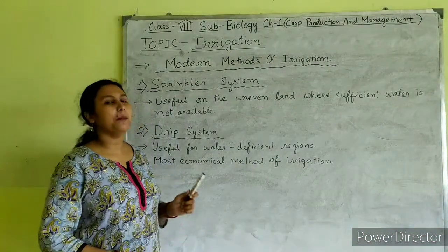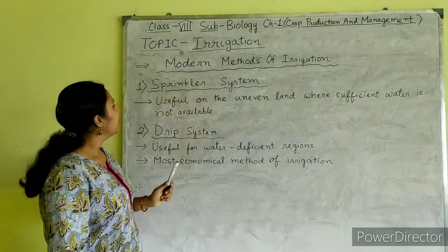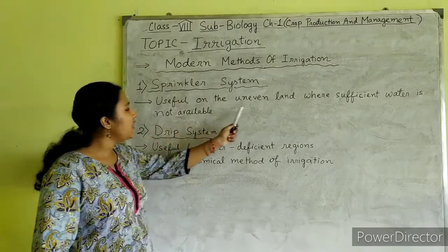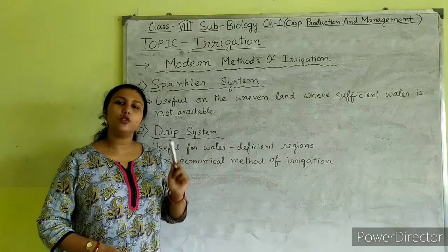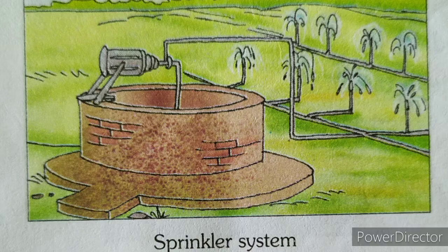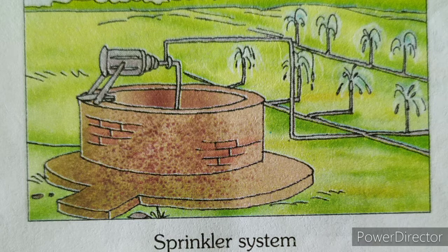Students, we will learn about the sprinkler irrigation system. In the sprinkler system, it is useful on uneven land when sufficient water is not available. In this picture, you can observe that the sprinkler pipes having rotating nozzles on top are joined to the main pipeline at regular intervals. When water is allowed to flow through the main pipe under pressure with the help of a pump, it escapes from the rotating nozzles and gets sprinkled on the crop as if it is raining.